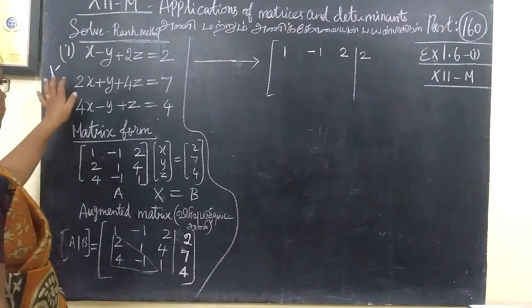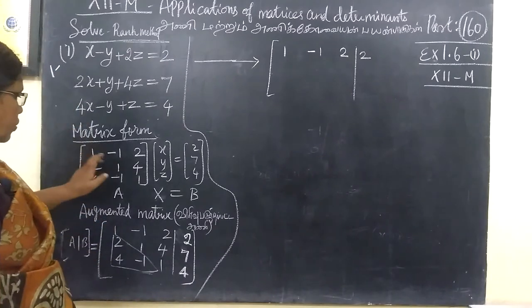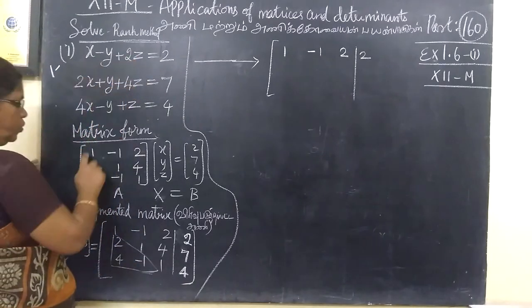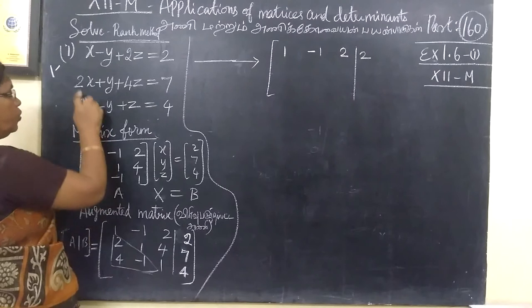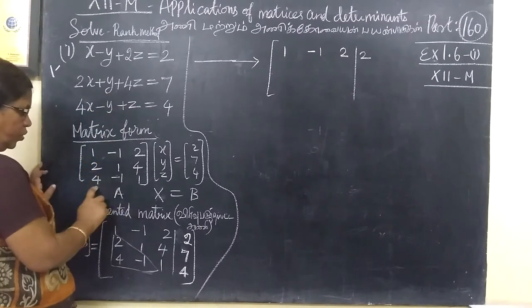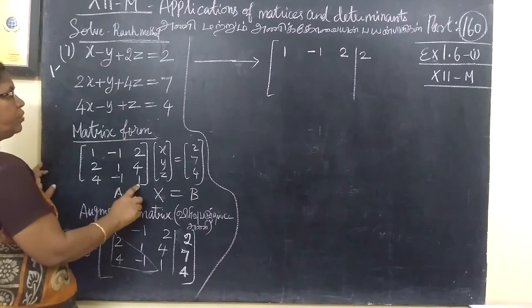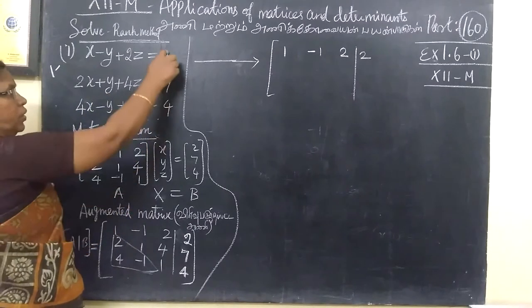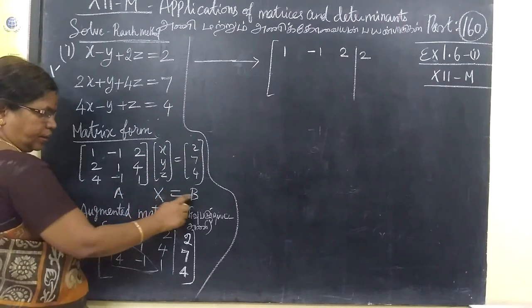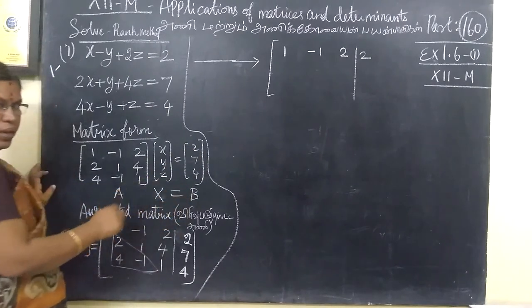First, collect all the coefficients. The coefficient matrix entries are: 1, -1, 2; then 1, -1, 2; then 2, 1, 4; then 2, 1, 4; then 4, -1, 1. Write the constants — this forms the system A·x = b.